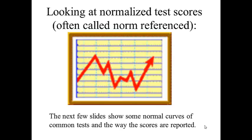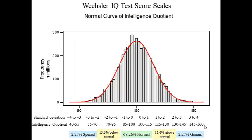Norm reference tests are calculated by using Z scores and T scores, and we'll not go too far into that, but I'll show you a few. Here's the Wexler IQ test score, and they can determine whether you are special needs, normal, or genius based on your IQ scale.